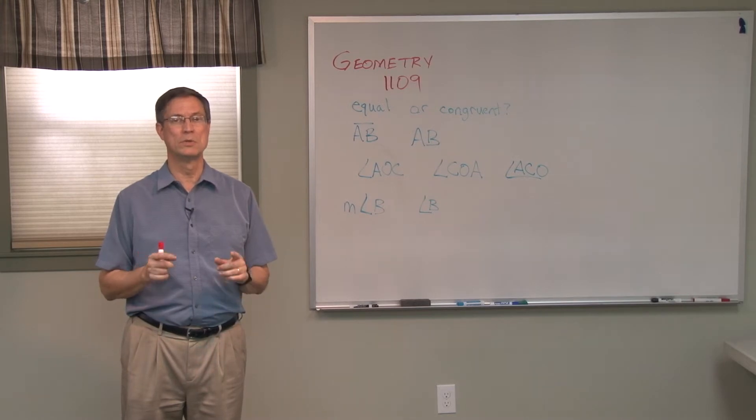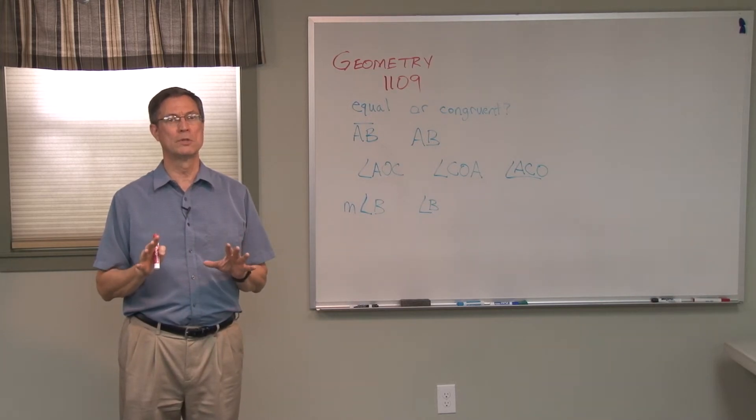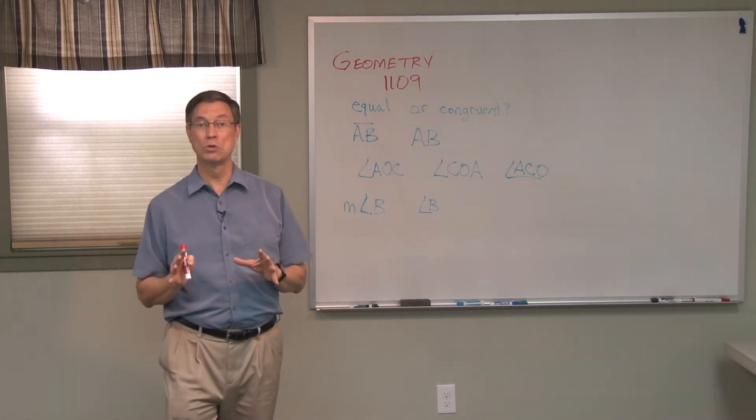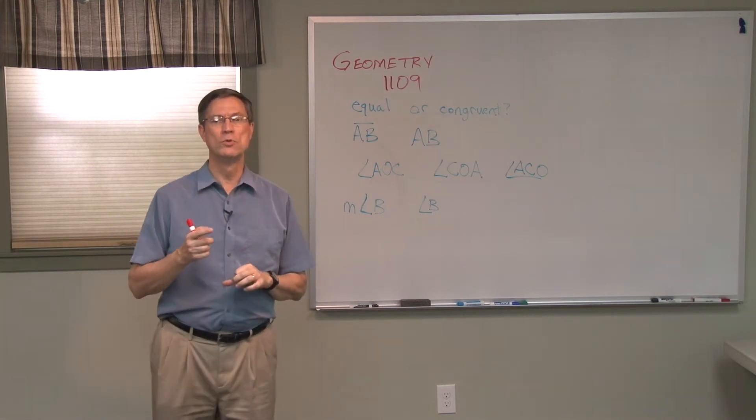That is congruent. It has nothing to do with taking a protractor and measuring how many degrees it is, or taking out a ruler and measuring the length. There are no numbers associated with it; we're just talking about the shape being the same.